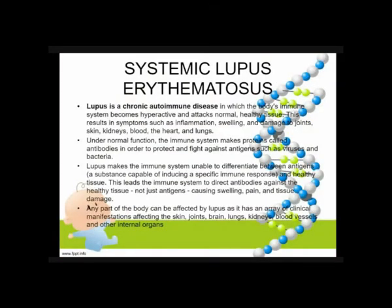Systemic lupus erythematosus is a chronic autoimmune disease in which the body's immune system becomes hyperactive and attacks normal, healthy tissues. This results in symptoms such as inflammation, swelling, and damage to joints, skin, kidneys, blood, the heart, and lungs of our patient. Under normal function, the immune system makes proteins called antibodies in order to protect and fight against antigens such as viruses and bacteria.